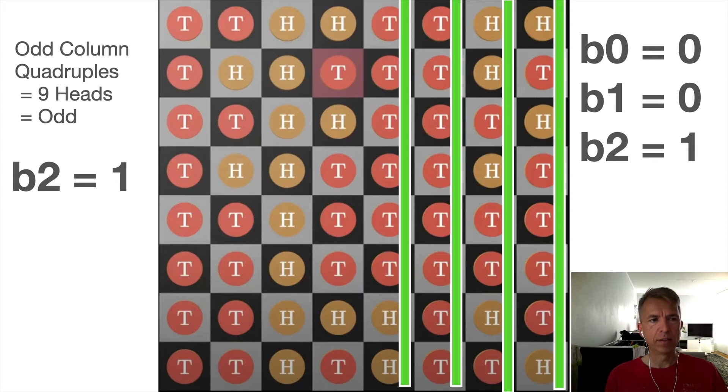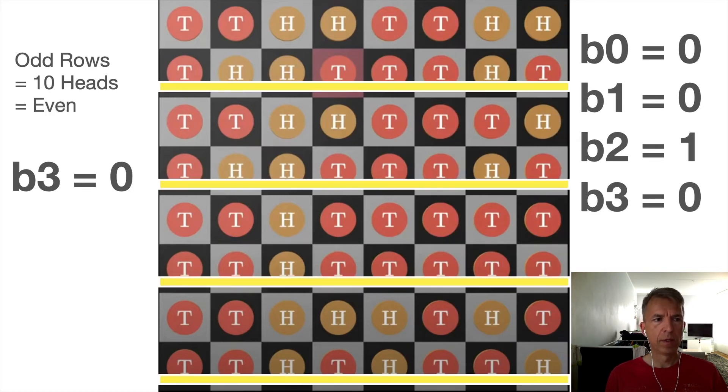We count the number of heads in the odd column quadruples. We get nine heads. This is odd. We get bit number two is one. We count the number of heads in the odd rows. We get 10 heads. This is even. Bit number three is zero.